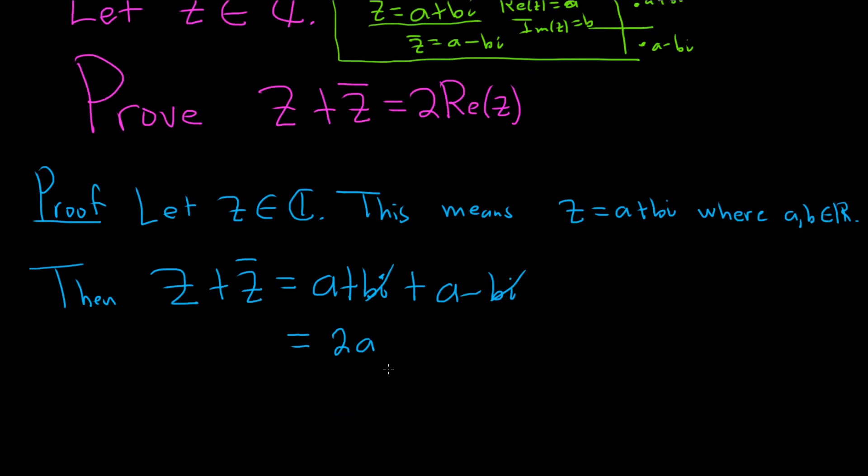But a is special. A is called the real part of z. So this is 2 times the real part of z. And that actually completes the proof. So it's a really simple proof. I hope this video has been helpful.